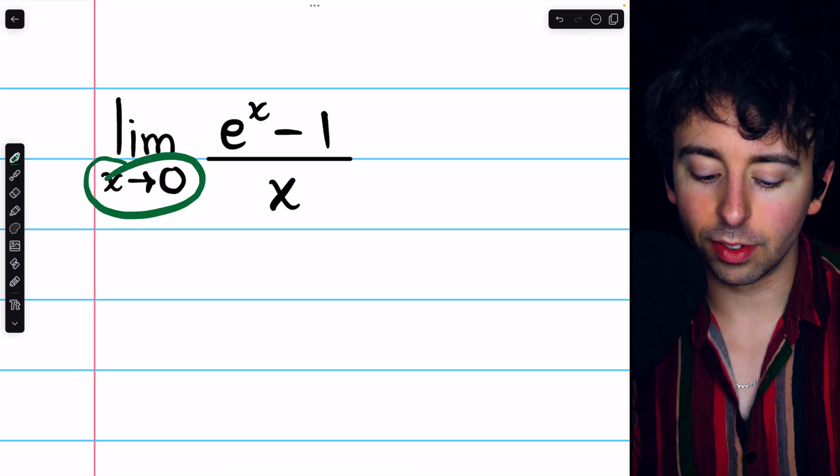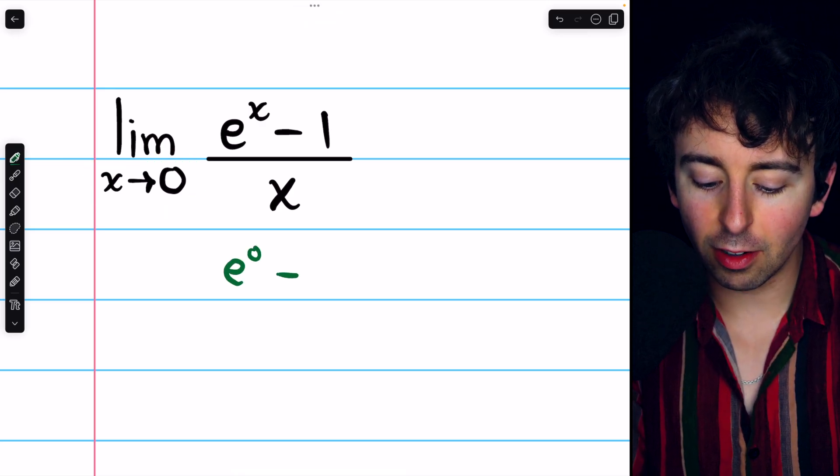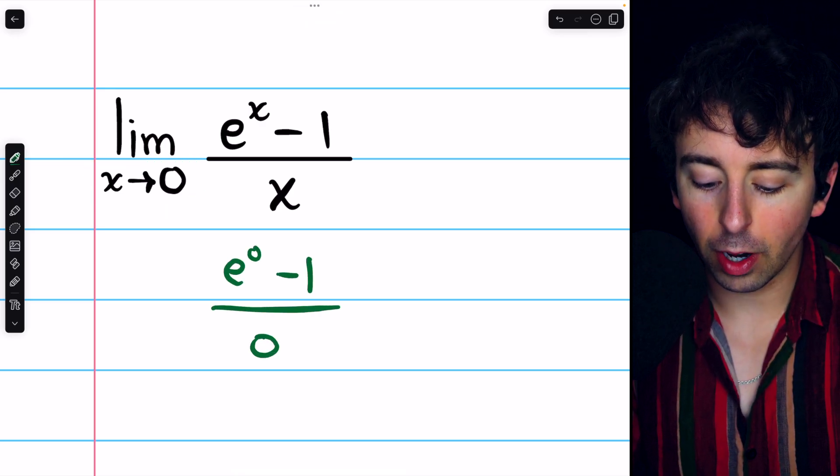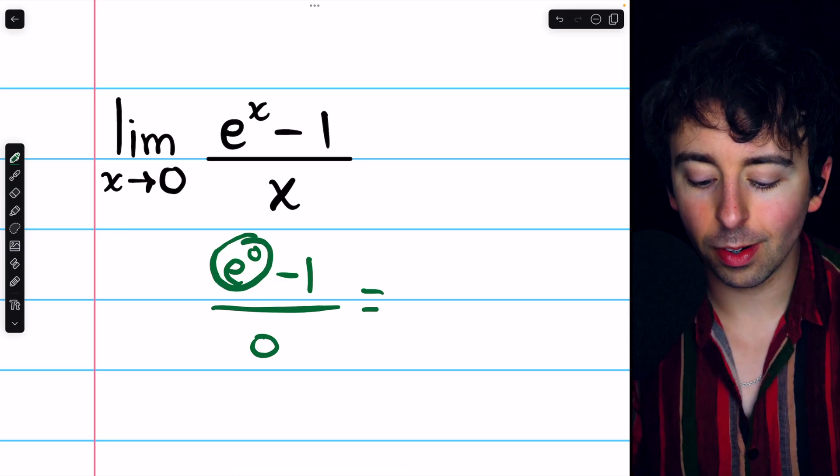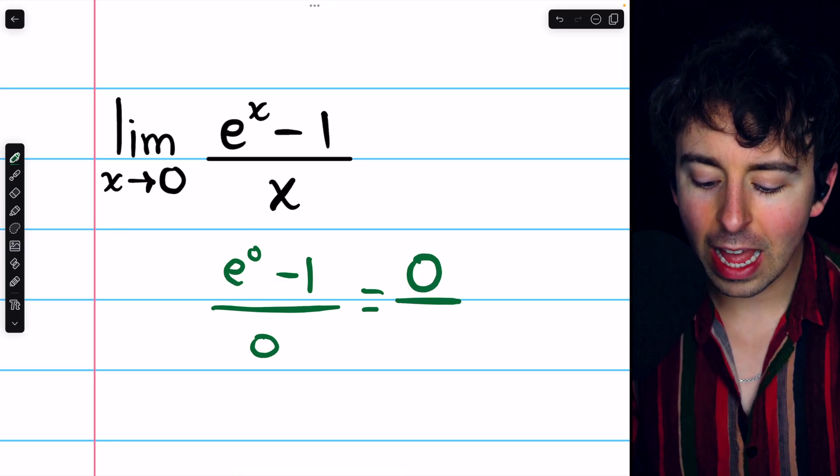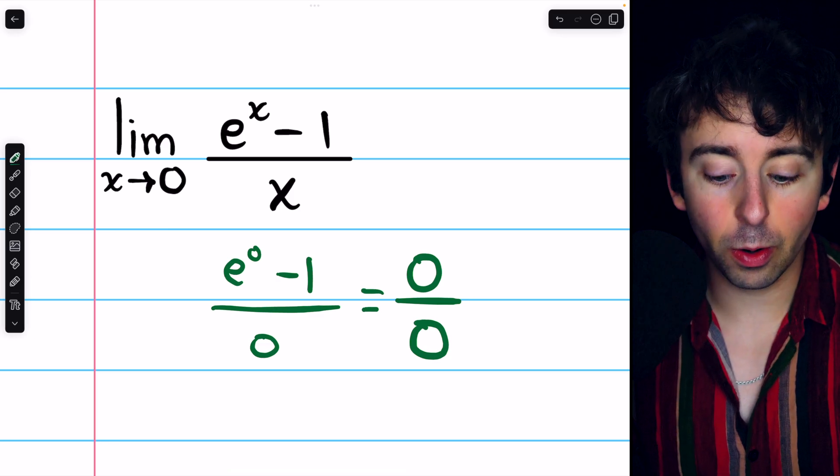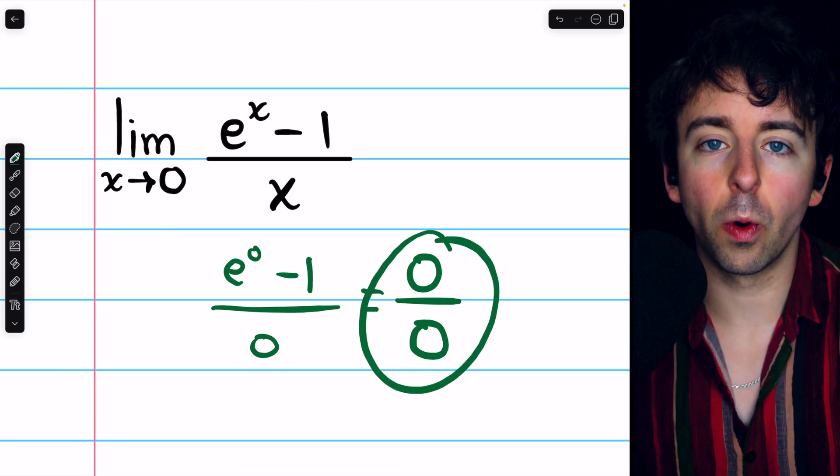If we plug in x equals zero, we get e to the zero minus one over zero. e to the zero is one, so in the numerator we have zero, and in the denominator we have zero. So this is an indeterminate form,